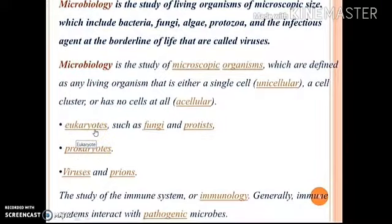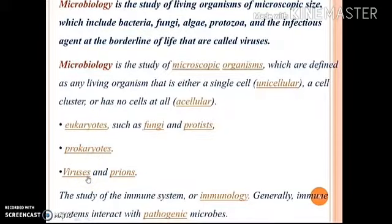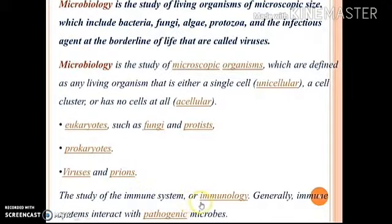Eukaryotes include fungi and protists, and prokaryotes include bacteria. Acellular includes viruses and prions. Another associated term with microbiology is immunology — the study of the immune system. Generally, immune systems interact with pathogenic microbes, meaning disease-causing microorganisms.